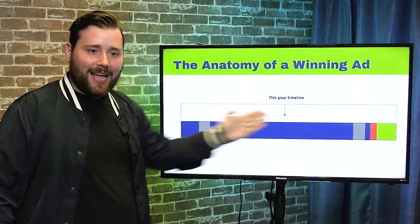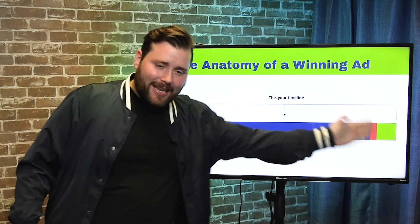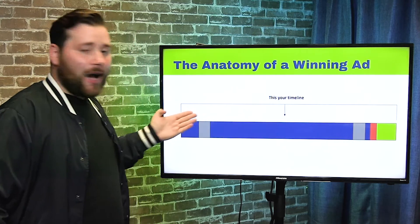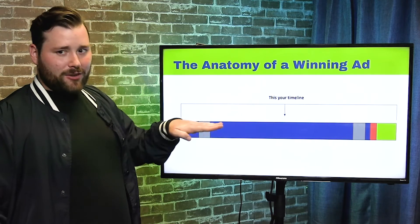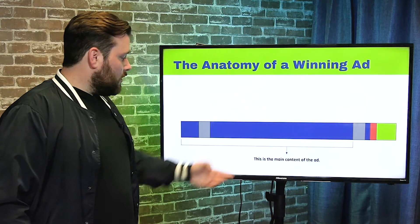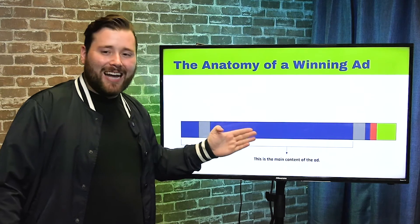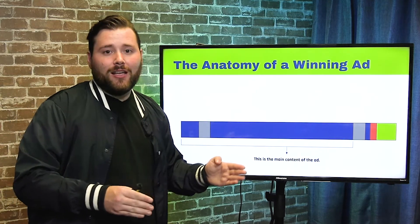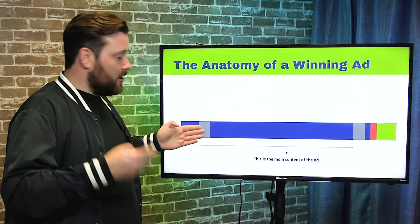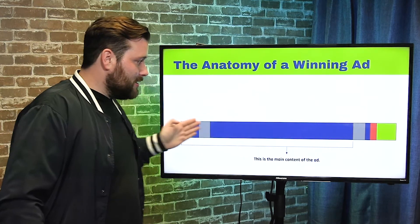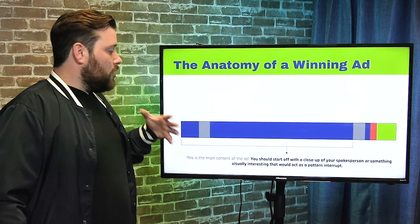This here is a video ad — this is the beginning, this is the end, we'll call this your timeline. This is the anatomy of an ad, what your ad should look like from a bird's eye view. This blue section from the beginning to right around here is your main content — you or your spokesperson delivering the ad through narration or video, reading the script written using the perfect ROI ads formula.